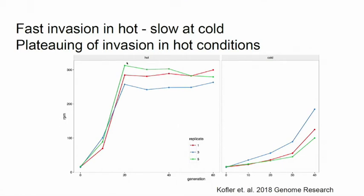When we measure this over several replicates over 60 or 40 generations — which is 4 years — we see that copy numbers go up crazily within the first 20 generations and then it stops. There is no increase in copy numbers anymore, and this is highly replicable among the replicates. Another thing we notice is that it's much slower at cold conditions. The first question that arises is: why does it stop in hot conditions, and why is it so abruptly and reproducibly stopping?